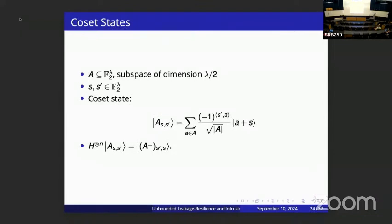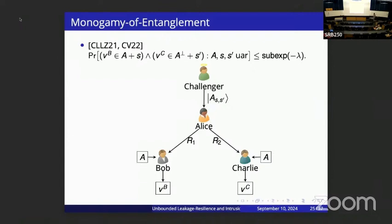Let me talk about our feasibility results. We have a public key encryption scheme satisfying leakage resilience based on indistinguishability obfuscation and the learning with errors assumption. Our construction uses so-called coset states, which are superpositions of all elements of a coset of dimension lambda-over-2, with a random subspace and a random shift, together with a random inner-product phase for some random element s-prime.